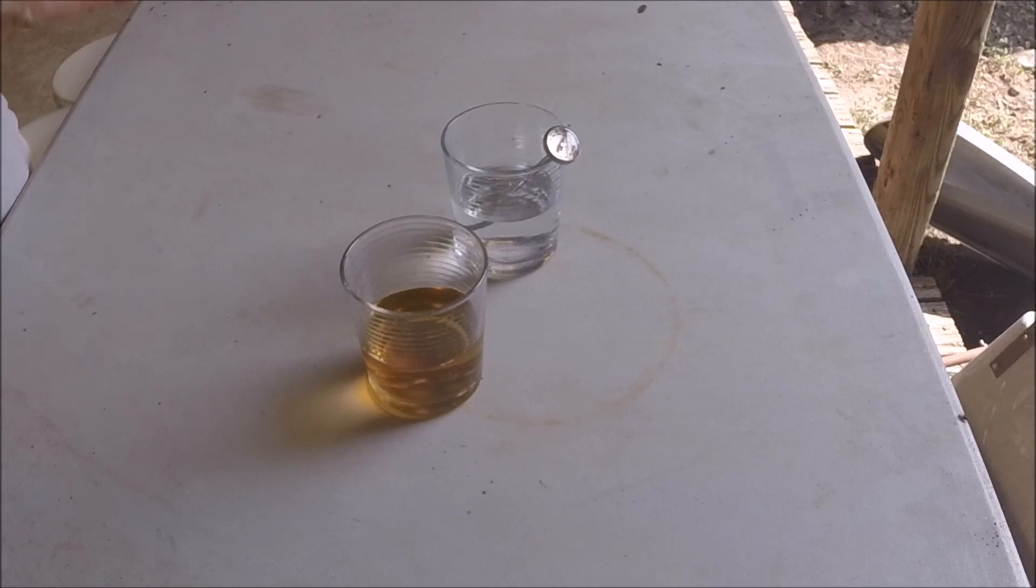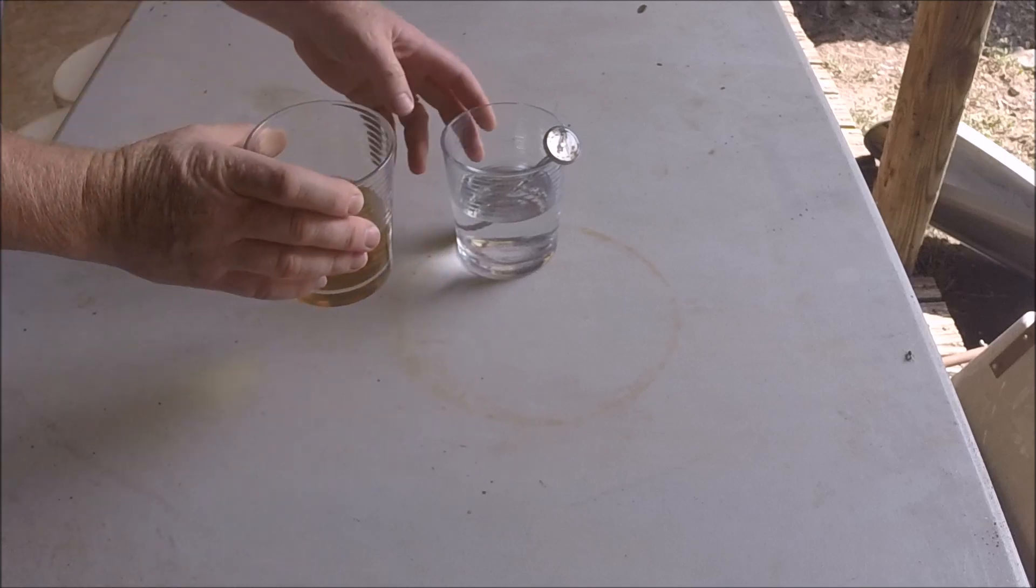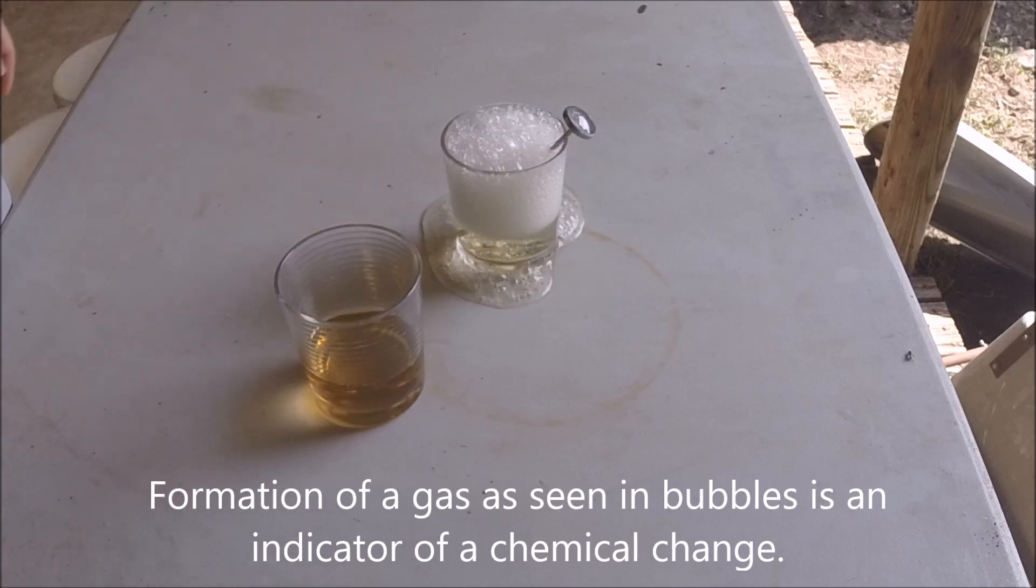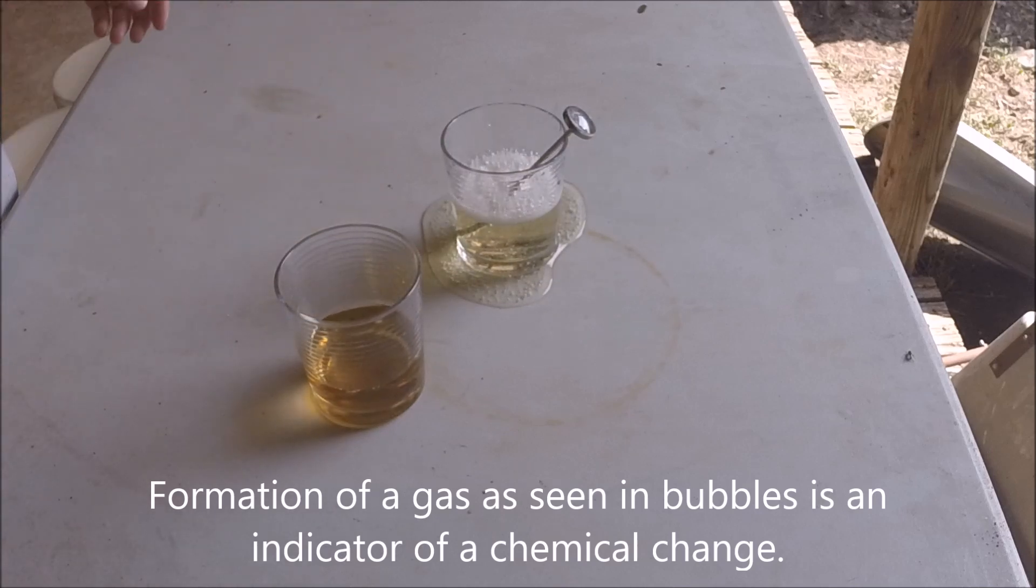One of the first things that we look at when we look at a chemical change is the production of a gas. And when you combine two substances and a gas is formed, that is a great indicator that you've had a chemical change. And if the chemicals that you combine are liquid, you would see the gas in the form of bubbles. So here's an example of that. I can combine these two liquids, and as soon as I do, it bubbles and foams. Perfect example of a gas forming.